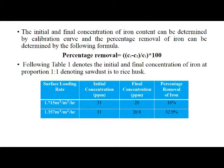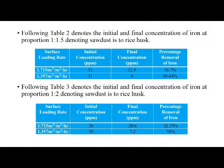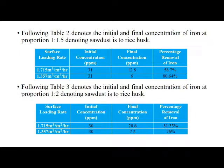Table 1 — proportion 1:1 (sawdust to rice husk): At SLR1, initial concentration is 31 ppm, final concentration is 26 ppm, percentage removal is 16%. At SLR2, initial concentration is 31 ppm, final concentration is 20.8 ppm, percentage removal is 32.9%. Table 2 — proportion 1:1.5 (sawdust to rice husk): At SLR1, initial concentration is 31 ppm, final concentration is 12.8 ppm, percentage removal is 58.7%. At SLR2 (1.357 m³/m²/hour), initial concentration is 31 ppm, final concentration is 6 ppm, percentage removal is 80.64%.